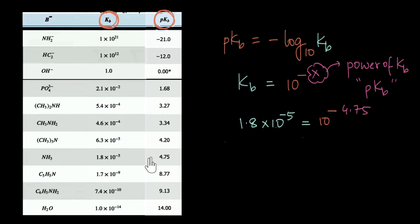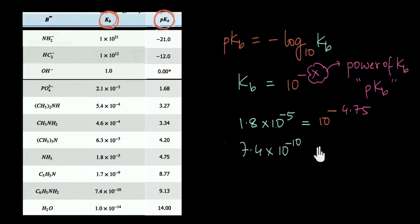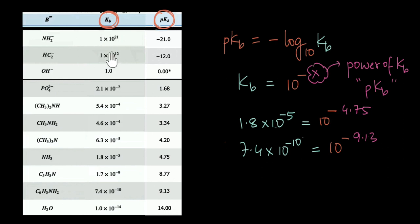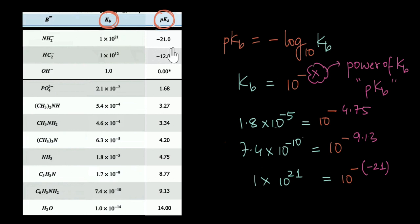Looking at the table, the PKB of ammonia is given as 4.75. Similarly, aniline has a KB of 7.4 × 10⁻¹⁰; doing the calculation, its PKB comes out to be 9.13. For one final example, the amide ion has a KB of 1 × 10²¹. If we want to write it in the form 10^(−x), we write it as 10^(−(−21)), so the PKB is −21, as shown in the table.